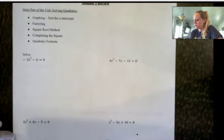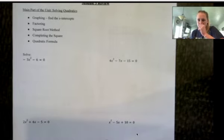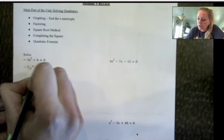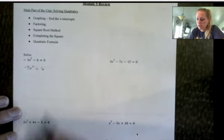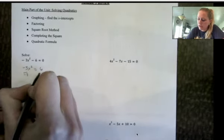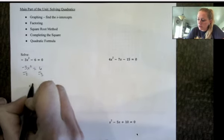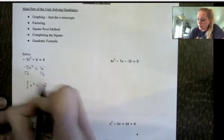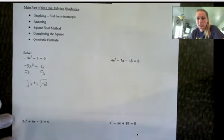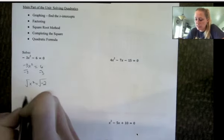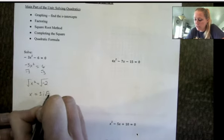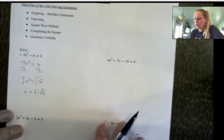This one would be most efficient to use the square root method because there's no b term. So I'm going to isolate x squared. I'm going to start by adding six to both sides and then dividing by negative three. And we have x squared equals negative two. Square root, remember anytime we take the square root plus or minus. If we're taking the square root of a negative, it needs to be written in terms of i. So this would be the same as i times the square root of two.